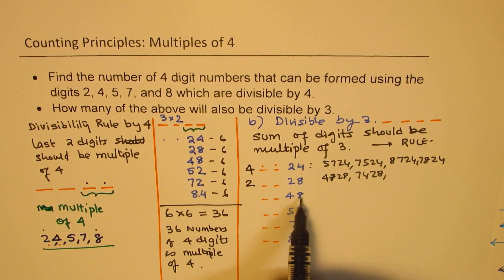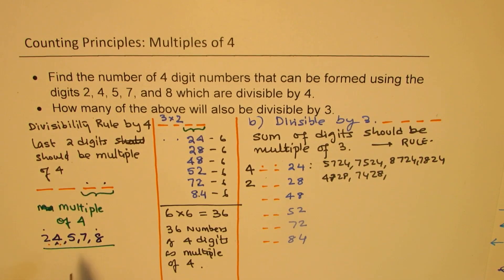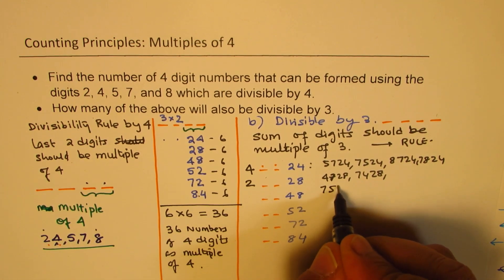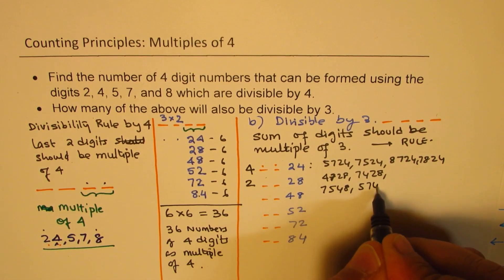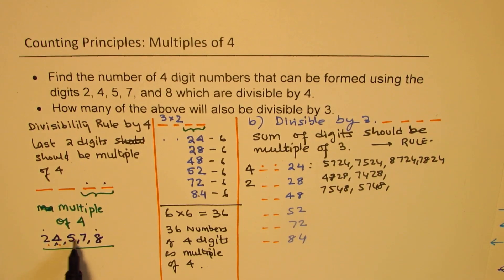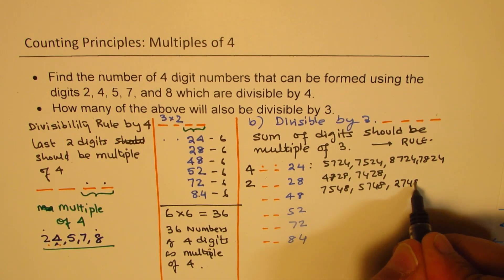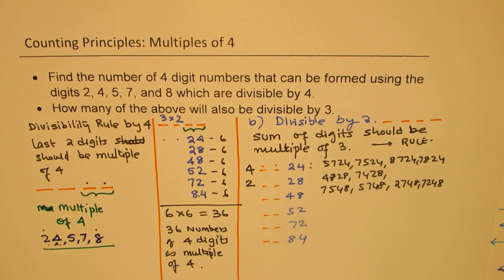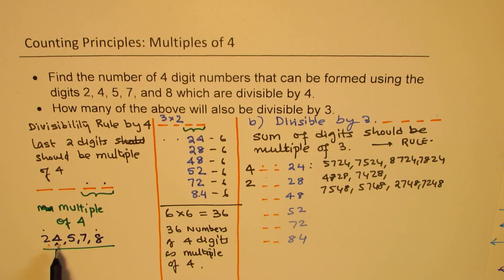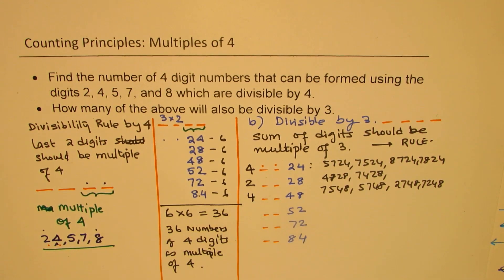48. 4 plus 8 is 12. It evens out, multiple of 3. Now in these, 7 and 5 is 12. It works. So we get 7, 5, 48, and we have 57, 48. 7, 5 works. So 2 and 7 also works. So we have 27, 48 and 72, 48. That also works. So these are the four numbers which can work. So we have four combinations.